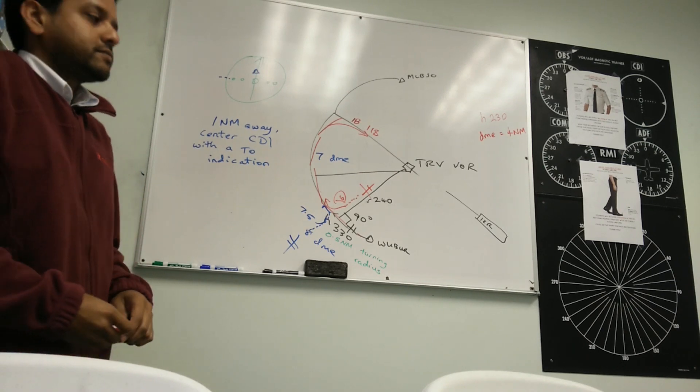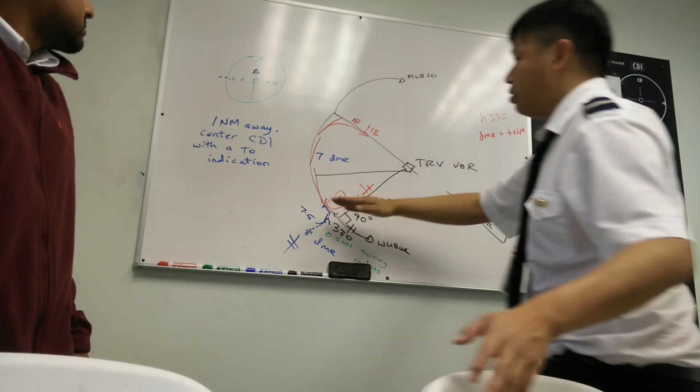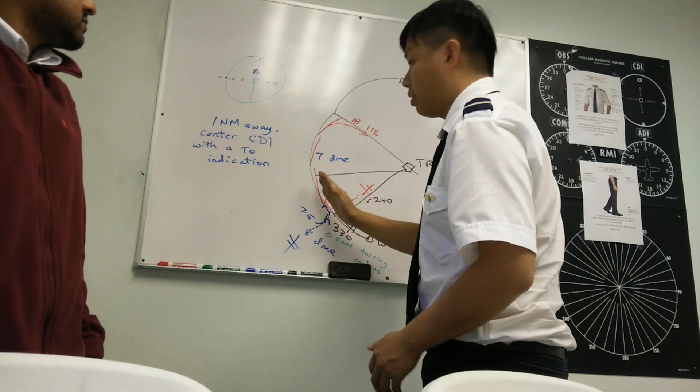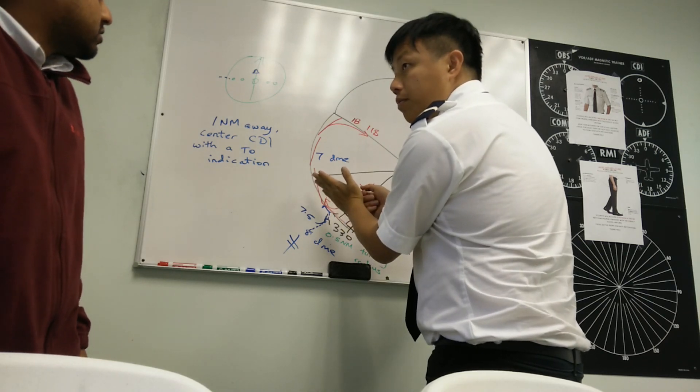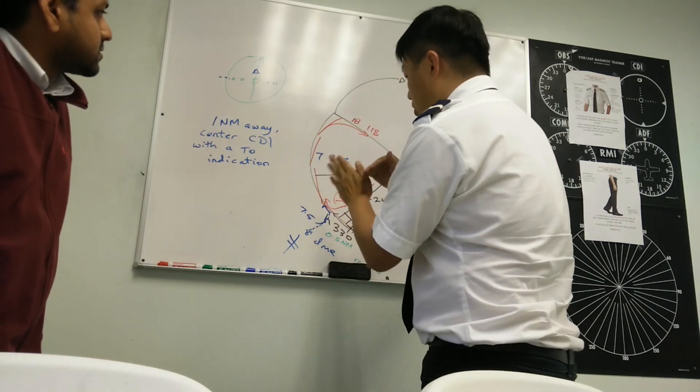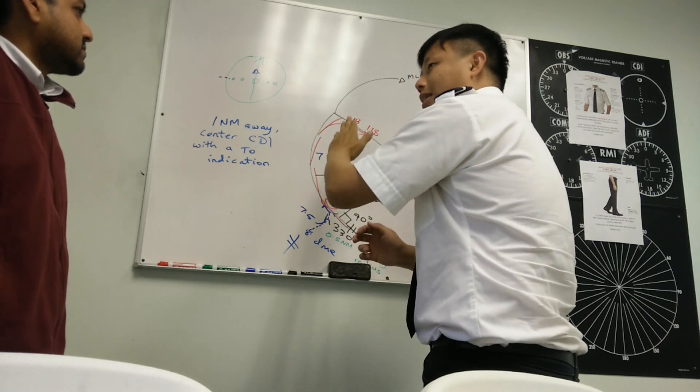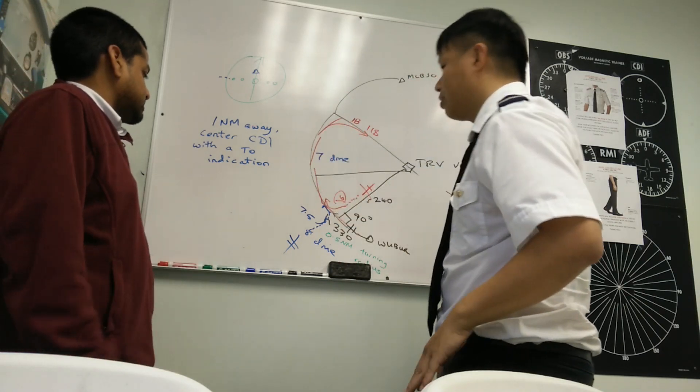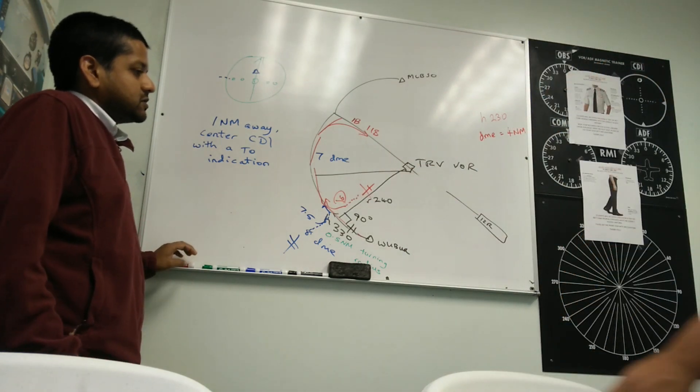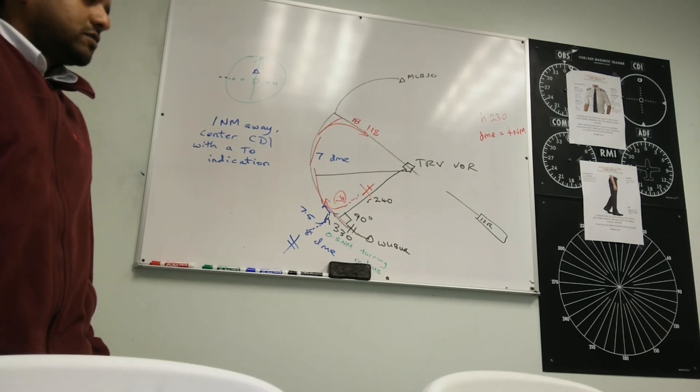After you finish, you turn the heading. Then you center the needle. The needle will be center. The course, right? The course, then you twist to the next 10 degrees and fly that heading. Twist 10. I mean, the first one is you have to manually center, right? Manually center it. Then look at the dots. The dots will tell you what heading to fly.